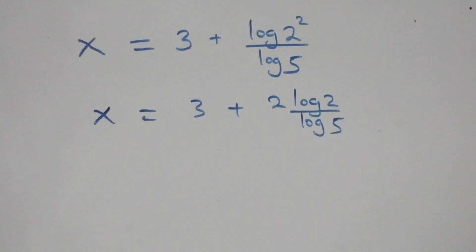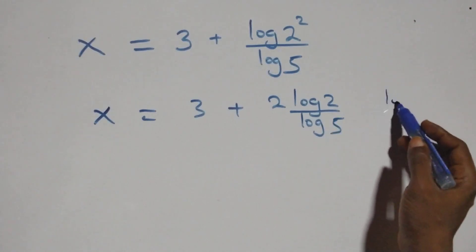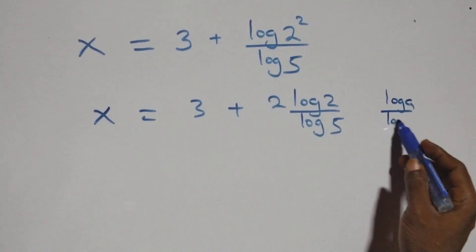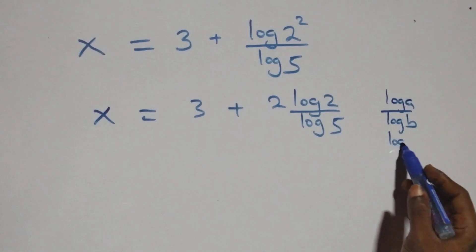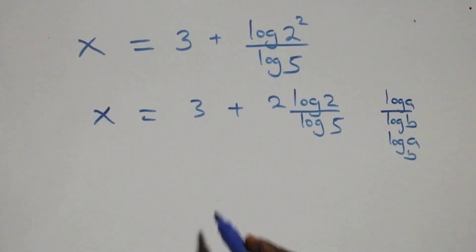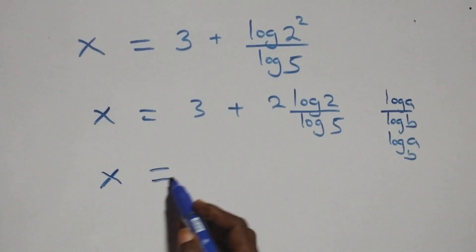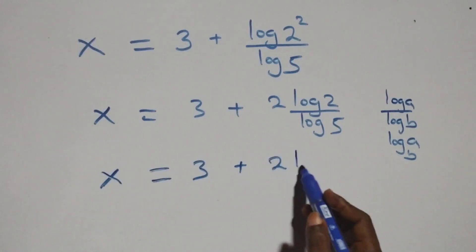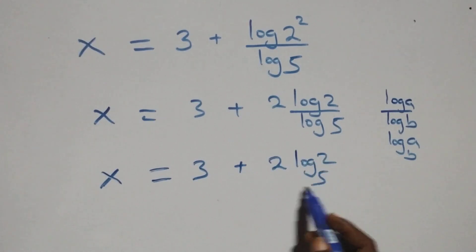That is, here we apply the change of base rule. When we have log a over log b, it is the same thing as log a to base b. So what we have becomes x equals to 3 plus 2 log 2 to base 5.